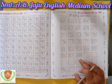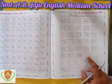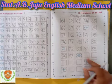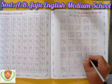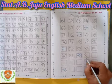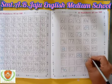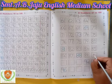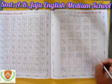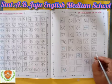This is 88. After 88, which number will become? 89. Write down first 8, then write down 9. 89. After 89, which number will become? 90.